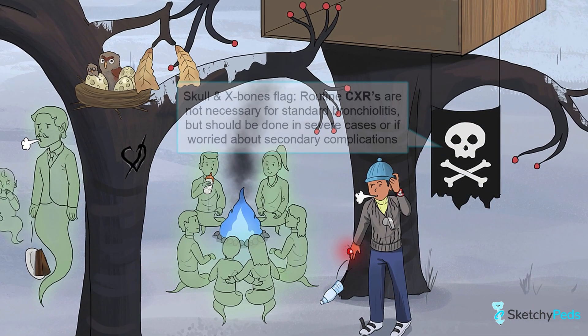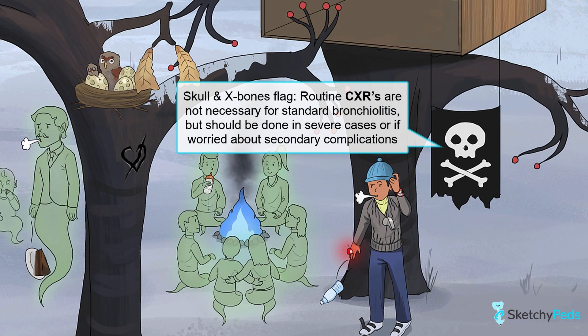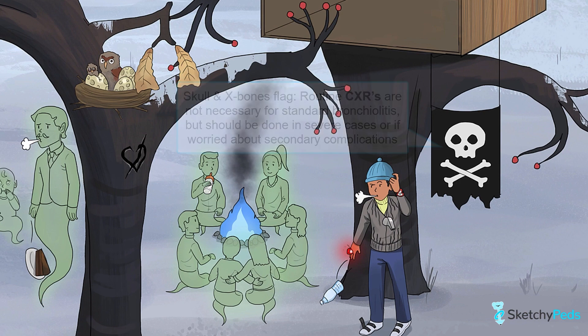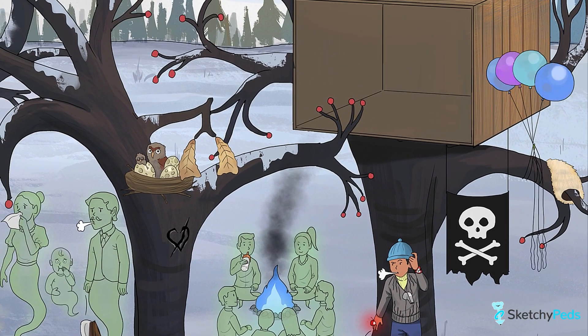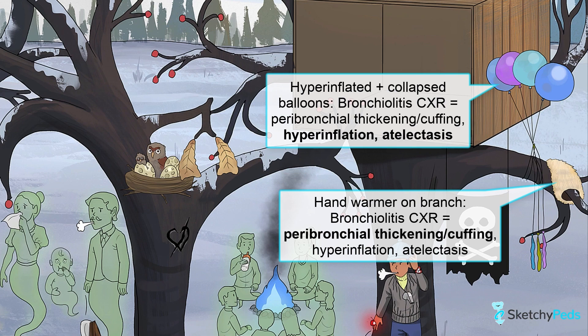But if your patient's presentation is severe enough for an ICU admission, or if there's concern for a possible complication like secondary bacterial pneumonia, then you can go ahead and order that chest x-ray. Chest x-rays in patients with bronchiolitis typically reveal peribronchial cuffing, represented by this hand warmer wrapped around this tree branch, hyperinflation, depicted by these overinflated balloons, and/or atelectasis, represented by these shriveled, collapsed balloons.